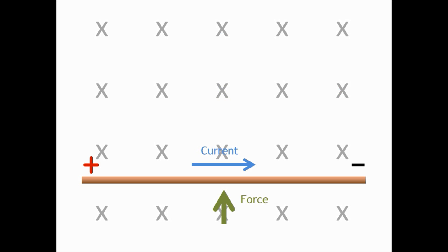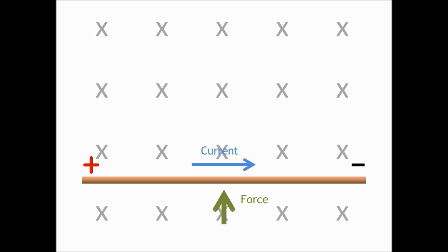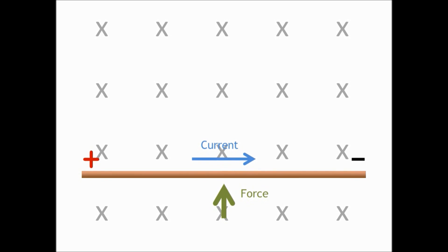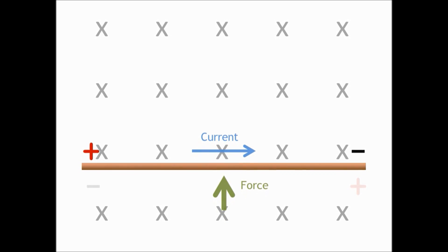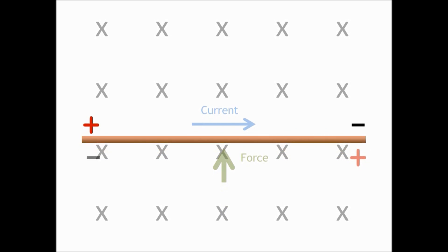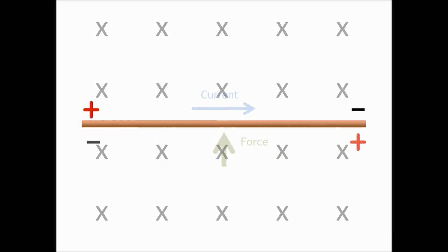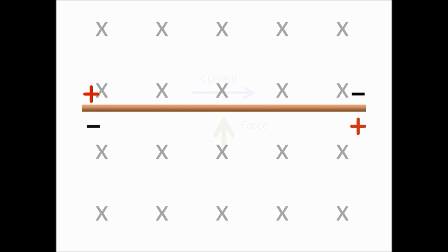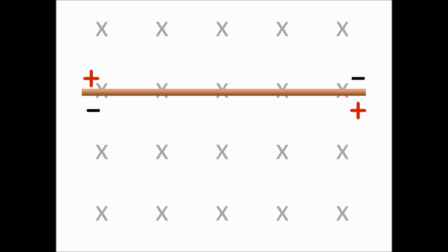So when the wire is stopped it will have a maximum current and no back voltage and it will generate maximum force. As it speeds up the back voltage will increase and the current and force will decrease. If the wire is moving fast enough the back voltage will be equal to the supplied voltage, meaning that no current will flow through the motor and the wire will not be under any force.